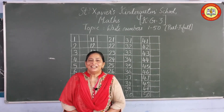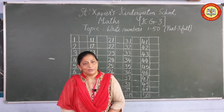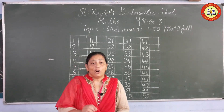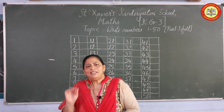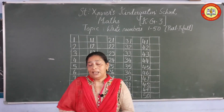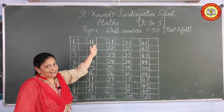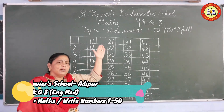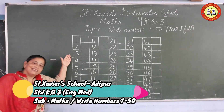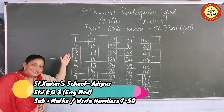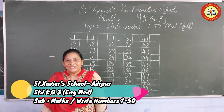Now students, your homework: write 1 to 50 in your notebook and do your homework without making any mistake. Do it again and again. While you are writing numbers, leave one square and write, and say the number loudly so that you can recognize the number easily. Okay students, stay home, stay safe. Thank you.